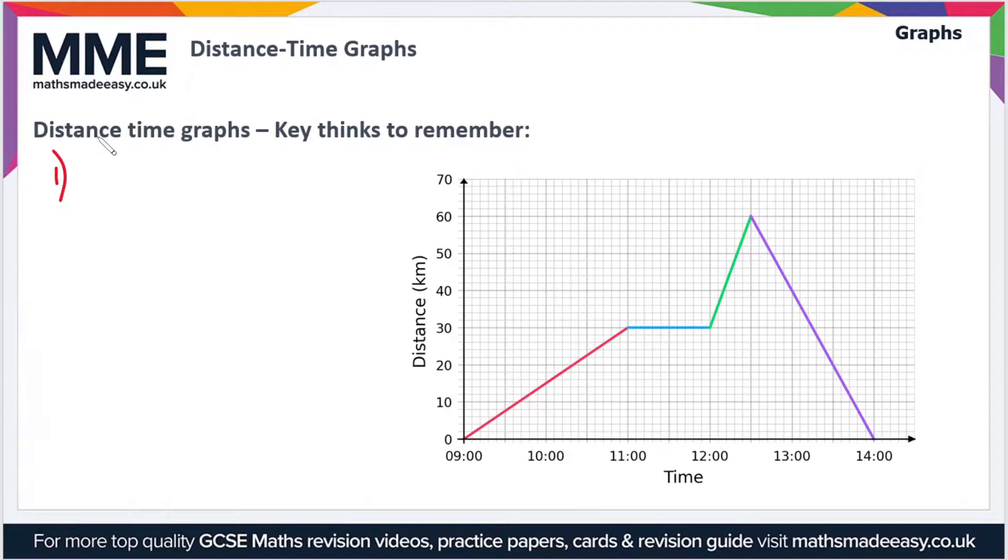The first thing is that the gradient of a distance-time graph is the distance divided by time. So if you divide distance by time, that gives you the speed. So the gradient of a distance-time graph is speed.